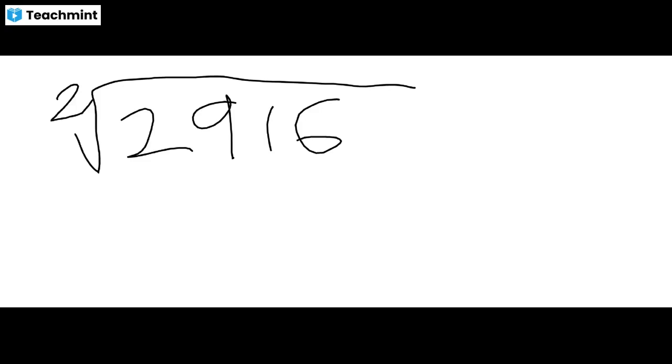This thing, yes, you are seeing here 2916. We have to find out the square root of this number. First of all, see on the unit place there is six. Four fours are sixteen is the one number. Another number is six sixes are thirty-six. Two numbers we have found out as options for the unit place.